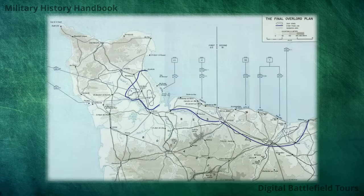Starting at the very top: the army group Easy Company was part of was the 21st Army Group under General Montgomery, which was put in charge of all Allied ground forces landing on the Normandy coast, with the goal of establishing an initial lodgement on the European continent. The 21st Army Group in turn consisted of two armies: the 2nd British Army landing to the east, and the 1st US Army landing to the west, the latter being under command of Lieutenant General Bradley.